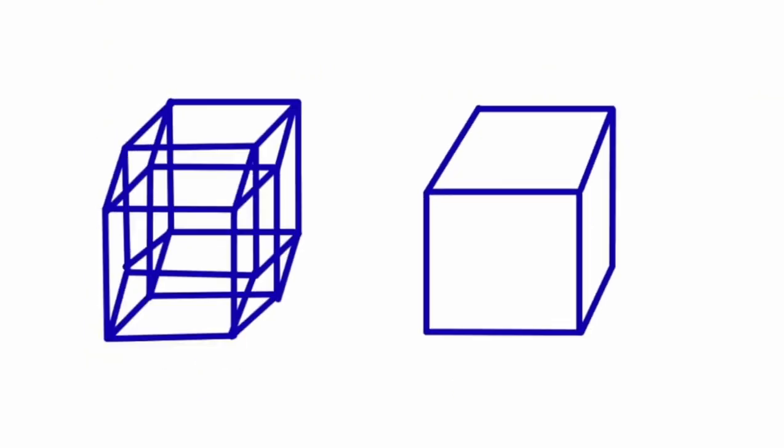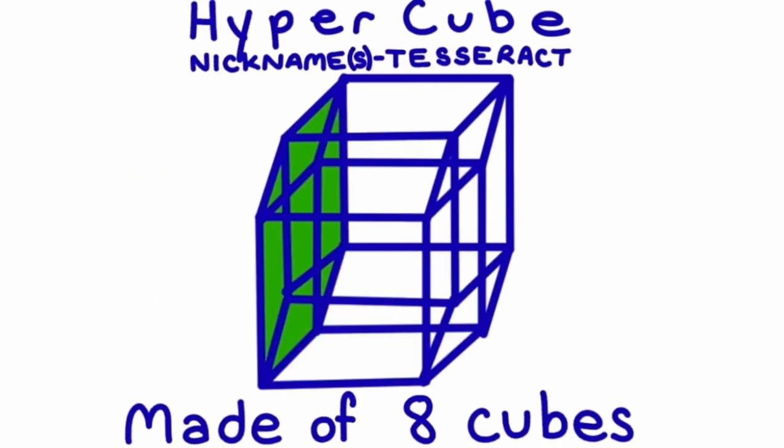Starting with a cube, we can fit three cubes around a shared edge. Then, we can use the space left to push it out into the fourth dimension in order to create a corner. The hypercube is made of eight cubic faces.